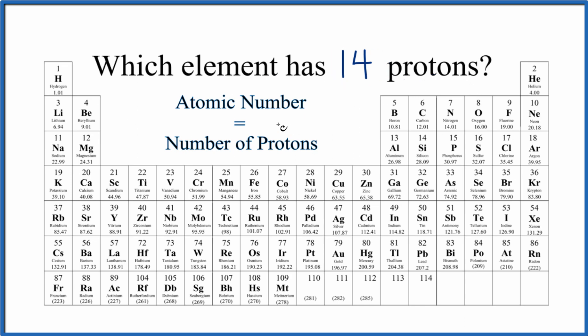So on the periodic table, the atomic number equals the number of protons. That's the definition of atomic number. The atomic number is the whole number right above the element symbol on the periodic table.